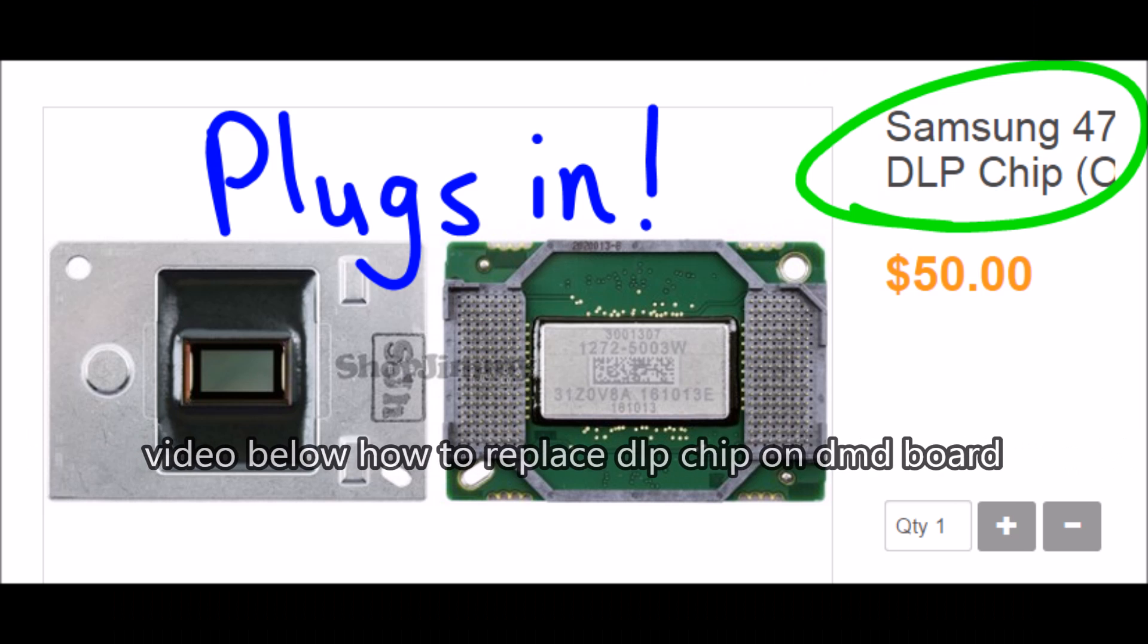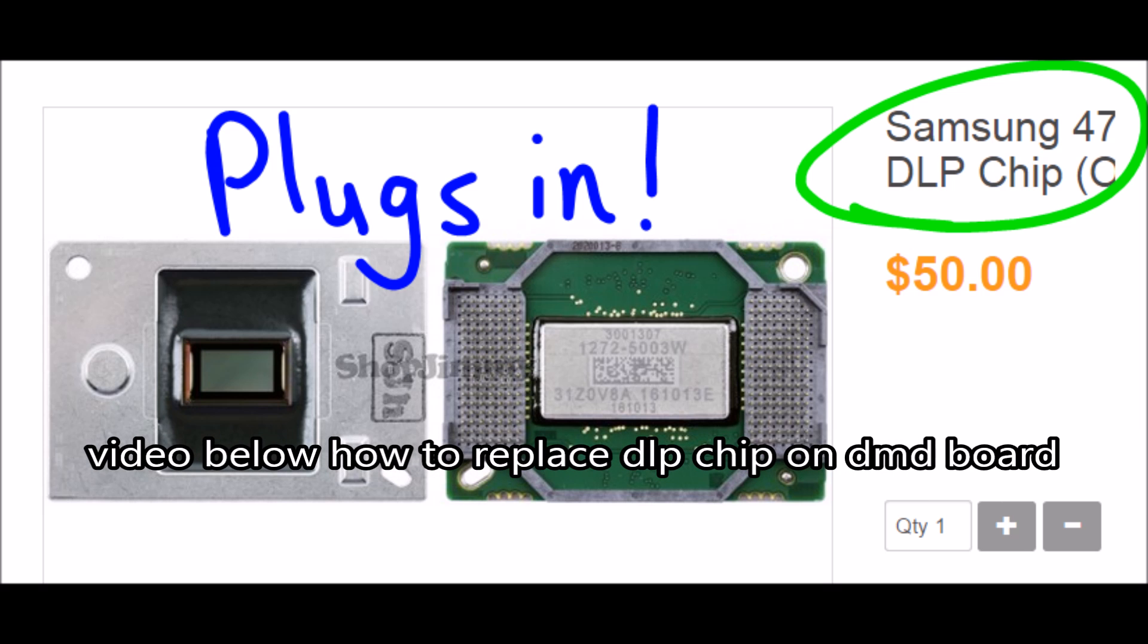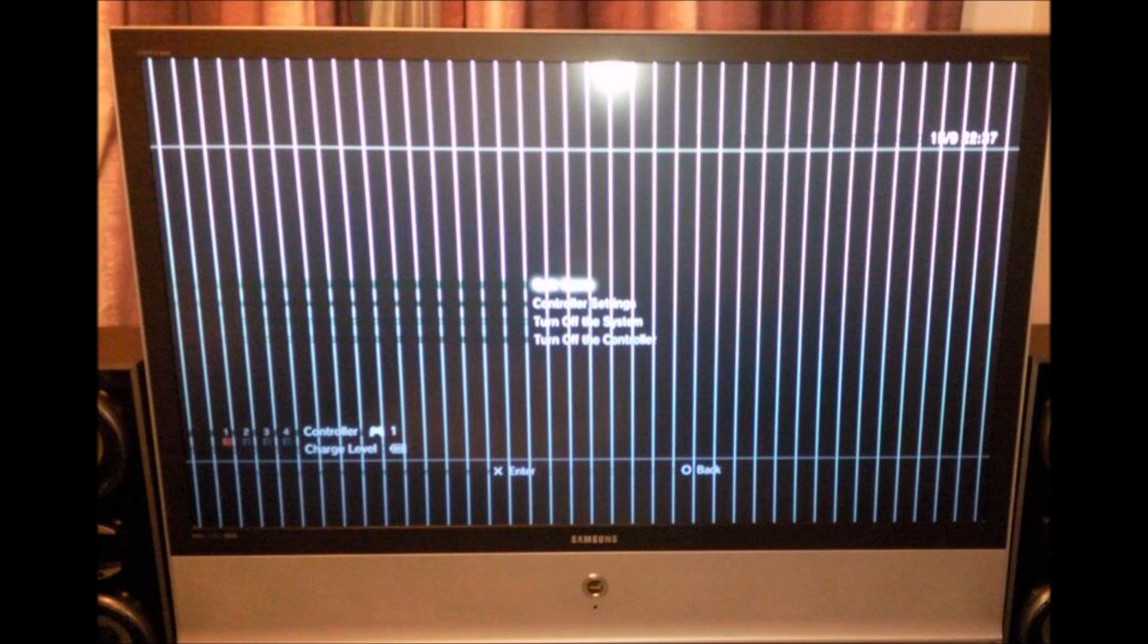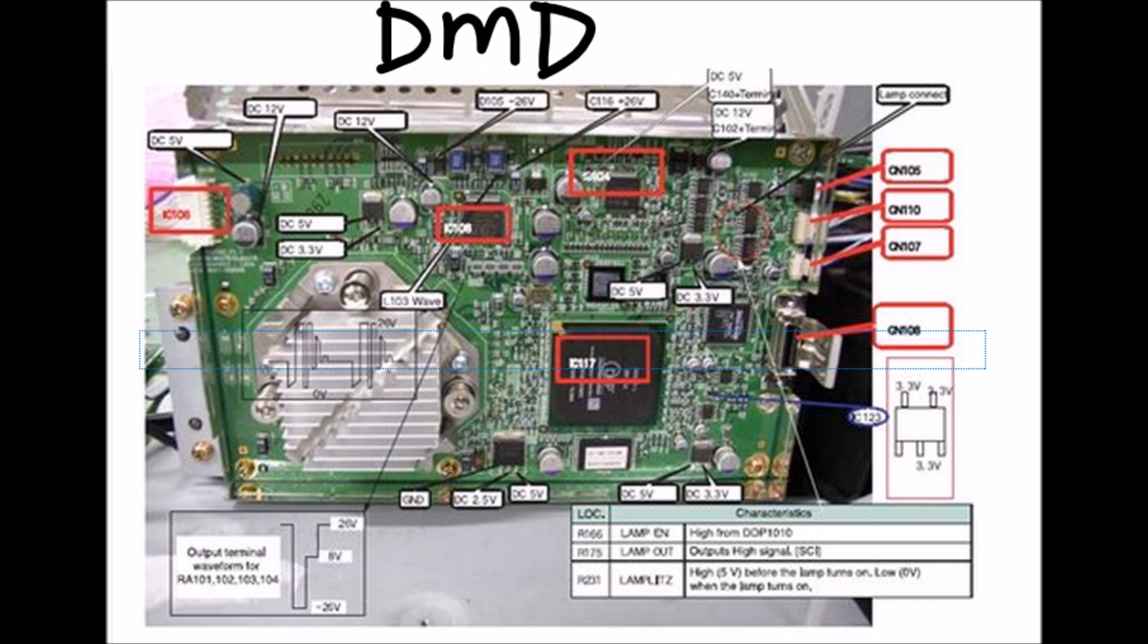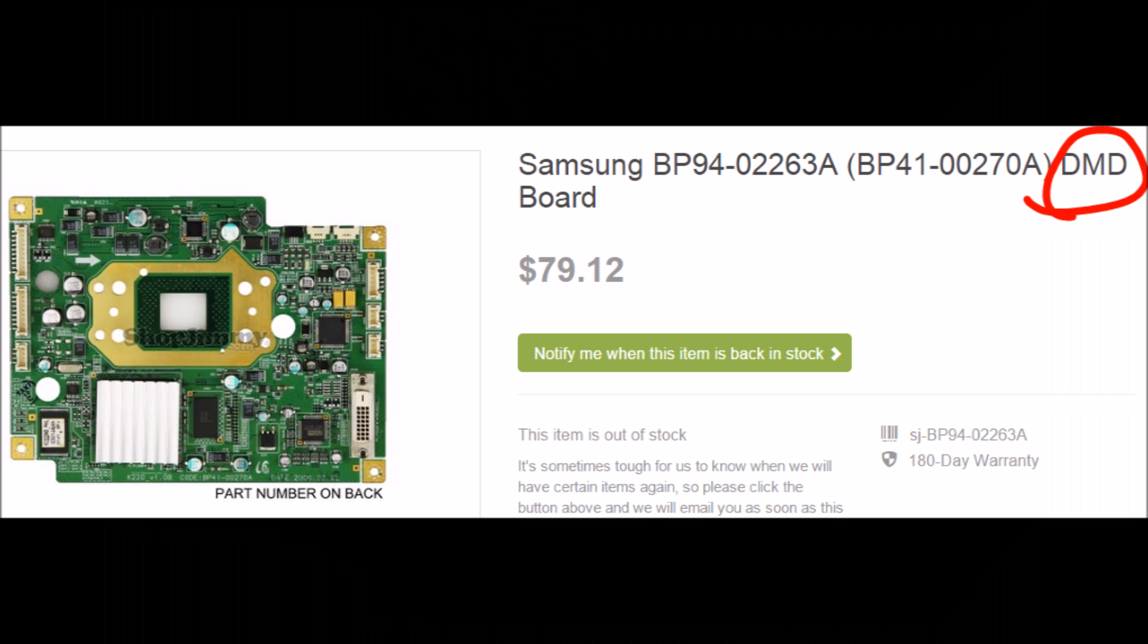Now, if you have dots on the DLP screen, that's most likely caused by the DLP chip, which is a plug-in chip. It's about $50. Now, if you have lines or prison bars on your TV screen, that can be most likely your DMD board located in the light engine. And that's about $60, $70.